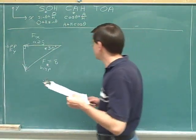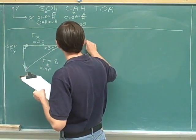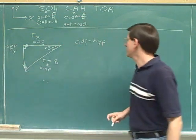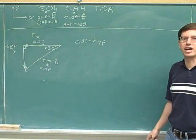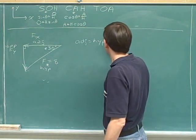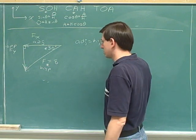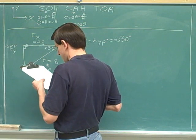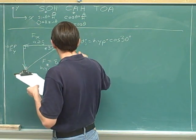To figure out the adjacent side, we know we take the hypotenuse, and should we then multiply that by the cosine or the sine? The adjacent side comes from the cosine. Cosine here of 30 degrees. Now the adjacent side here is f sub x.